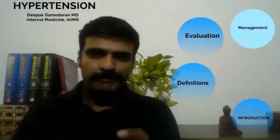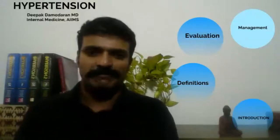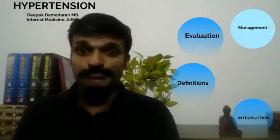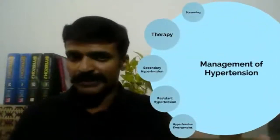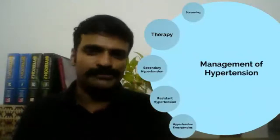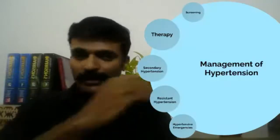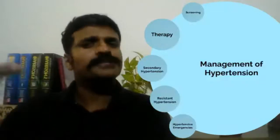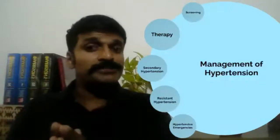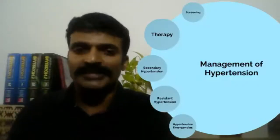Having seen the evaluation of a patient with hypertension, we shall now get to the practical matter of management. We will look at management under several headings, starting with screening: screen anybody more than 40 years of age for hypertension. If no hypertension is found, screen yearly. If a patient with high family risk comes to you, it is worthwhile to screen even before the age of 40.